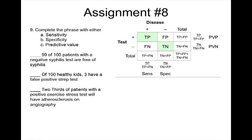In this lecture, we will go over problems 9, 10, and 12 from assignment number 8. Problem 9, we were to complete the phrase with either sensitivity, specificity, or predictive value. The table on the upper right of each slide shows the basic format for a 2x2 table showing disease and test, and highlights in green true negatives and true positives, and shows the location of sensitivity, specificity, predictive value positive, and predictive value negative.